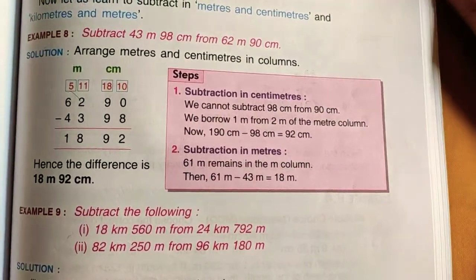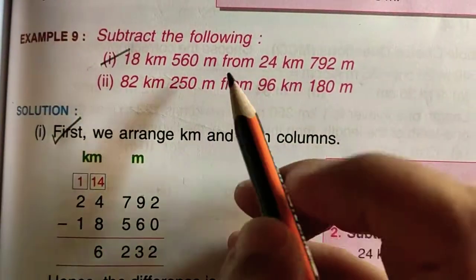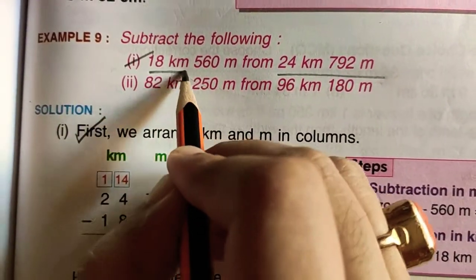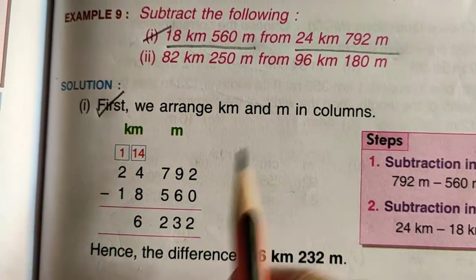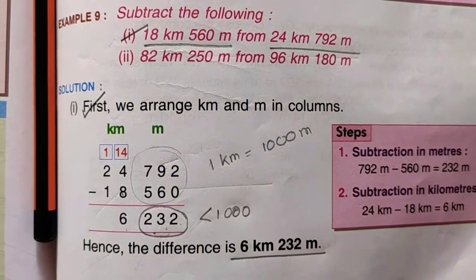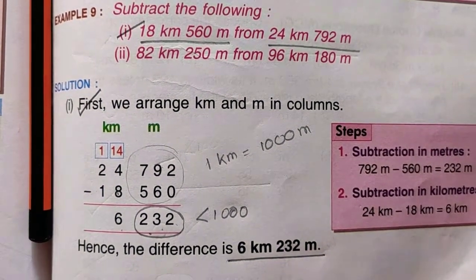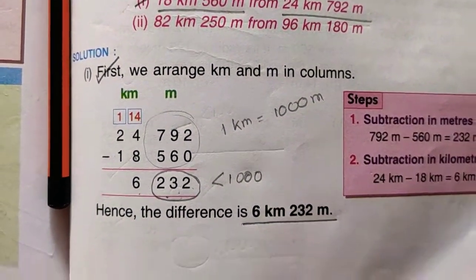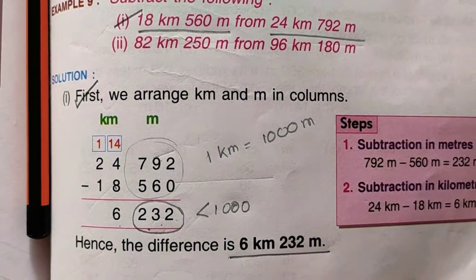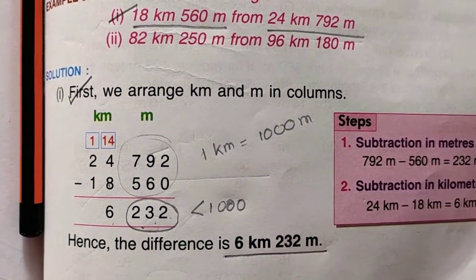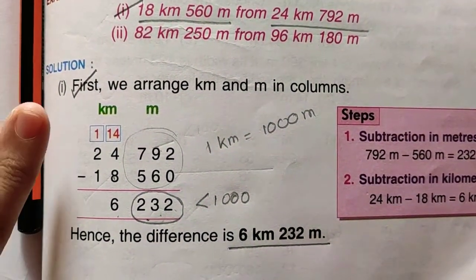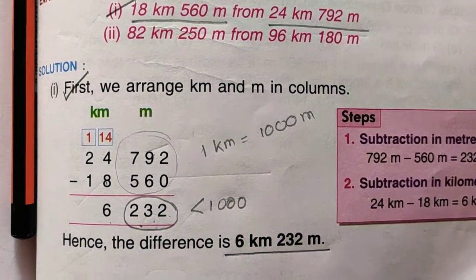So first look at the normal subtraction. The problem is this: 24 kilometer 792 meter minus 18 kilometer 560 meter. So this is the kilometer meter problem. As per same as addition, what do we do? We first make different columns. There are two: one kilometer, one meter. So we make two columns.